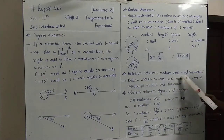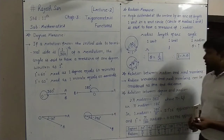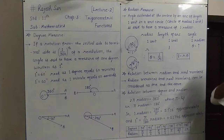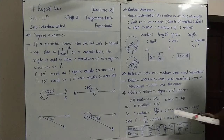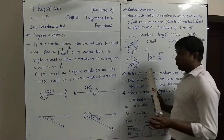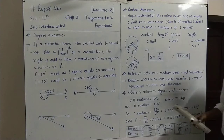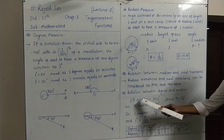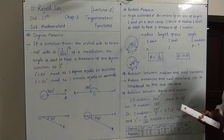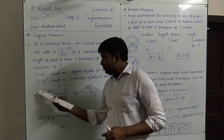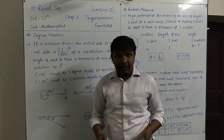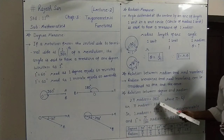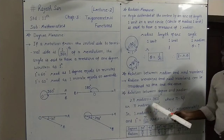Next is the relation between the radian and the real number. Radian measures and real numbers can be considered as one and the same. Now, the relation between degree and radian — if we take a complete round, it will be 2 pi radian. And in degrees, one complete revolution makes 360 degrees. So 2 pi radian equals 360 degrees. This is the original relation.